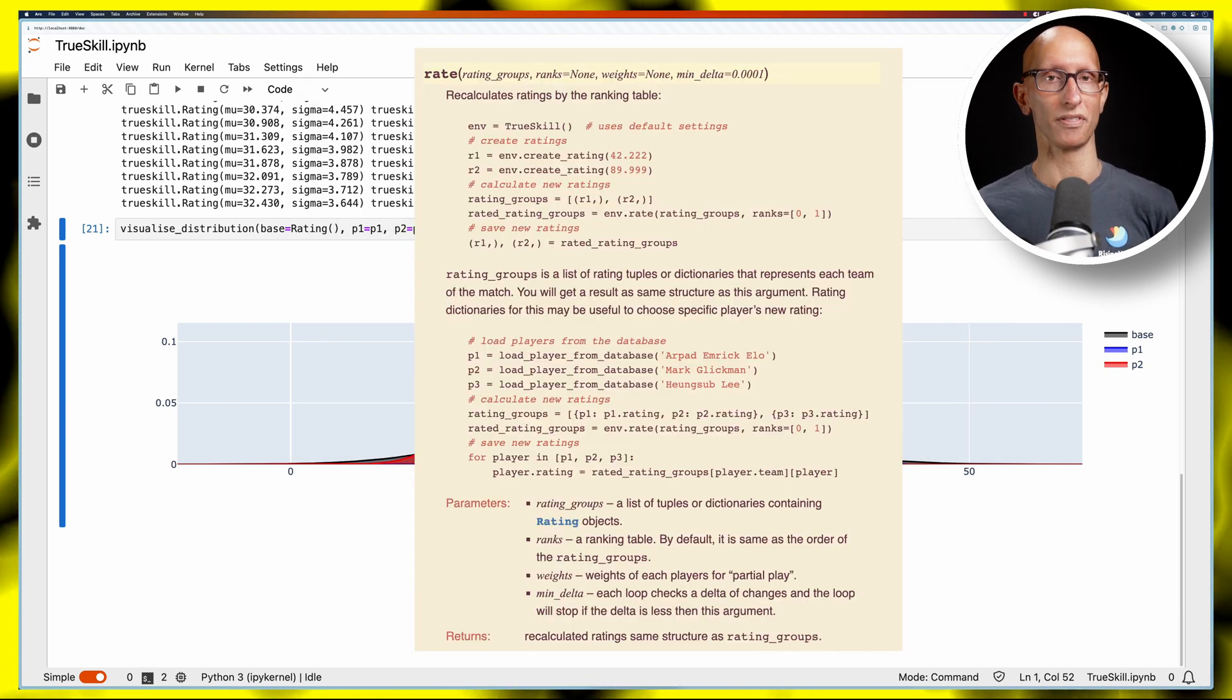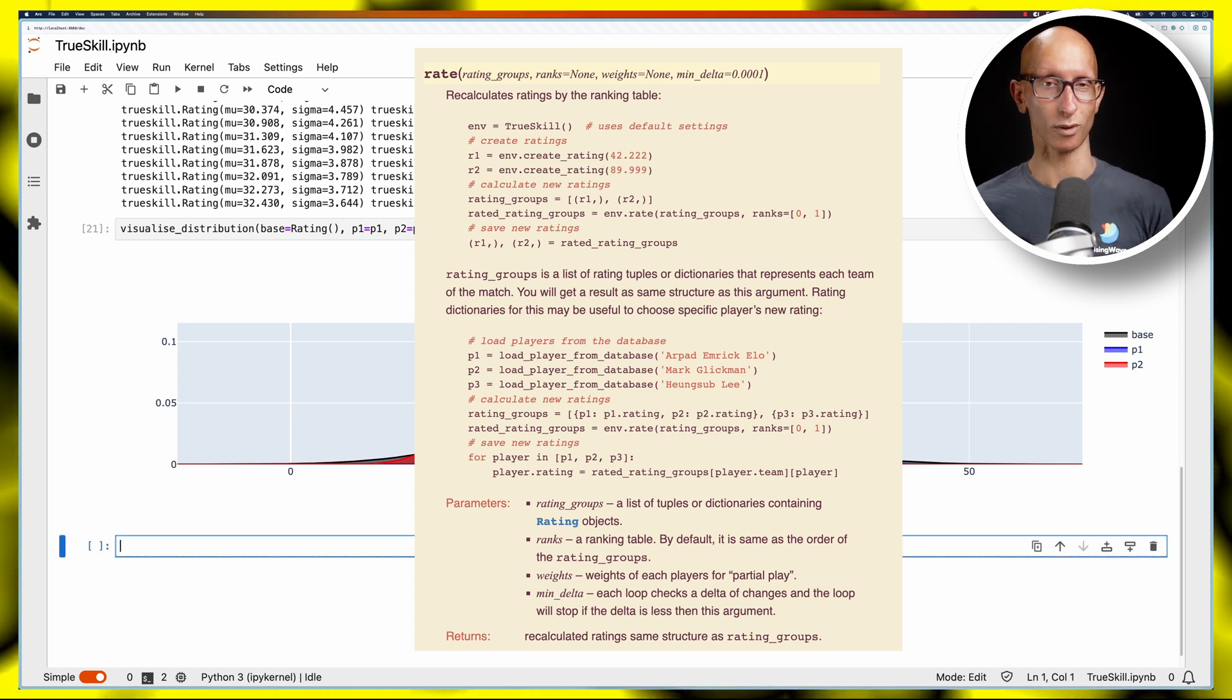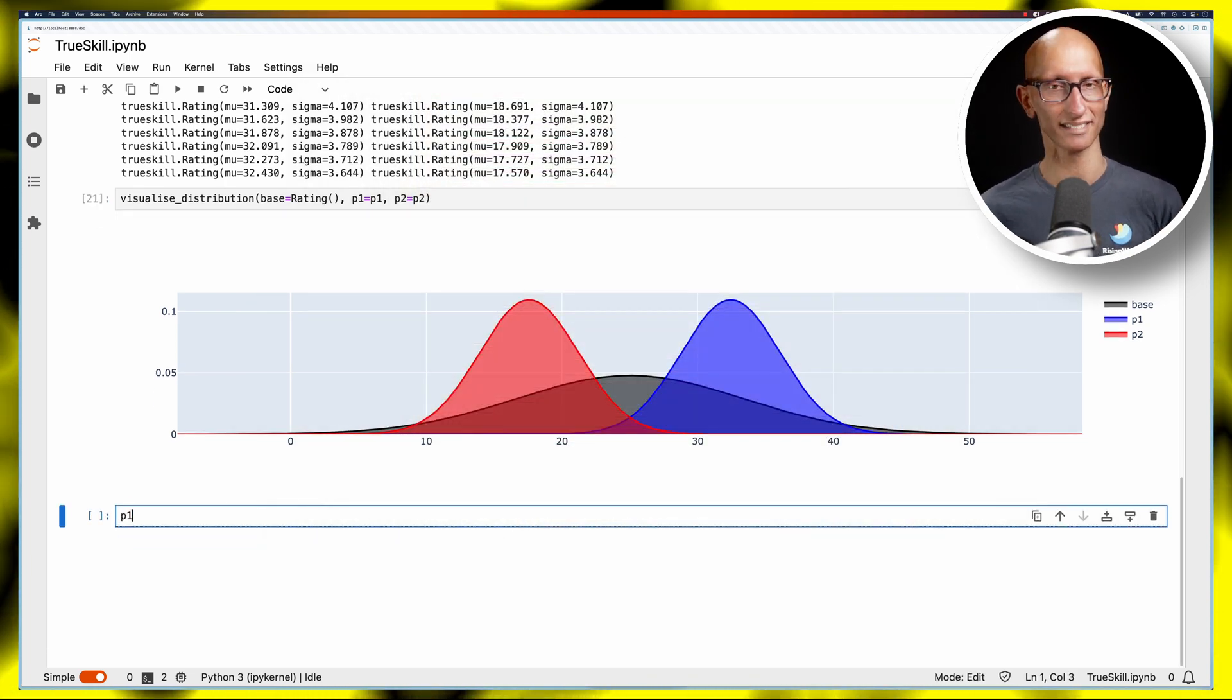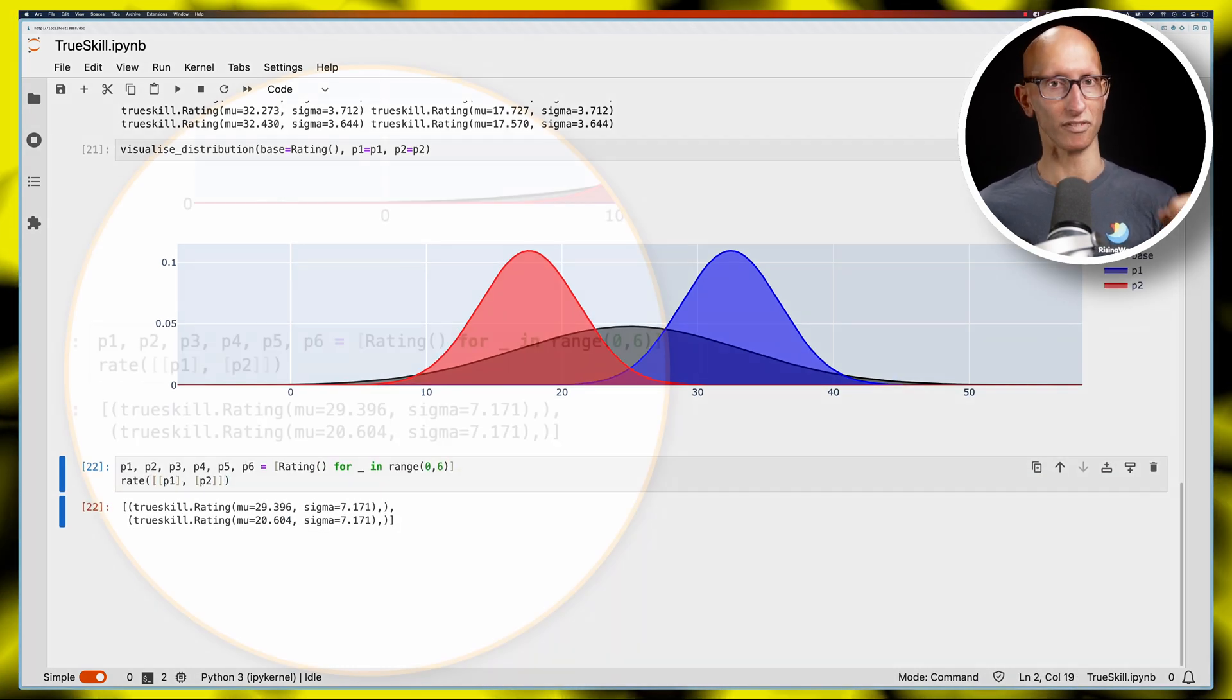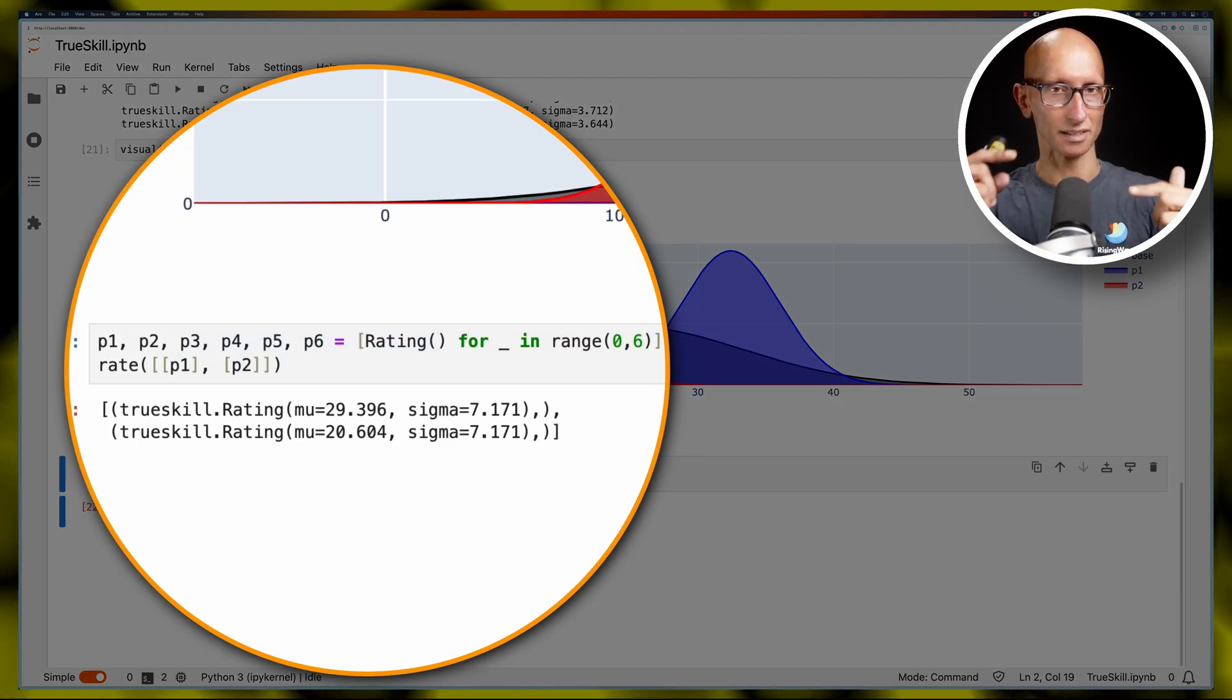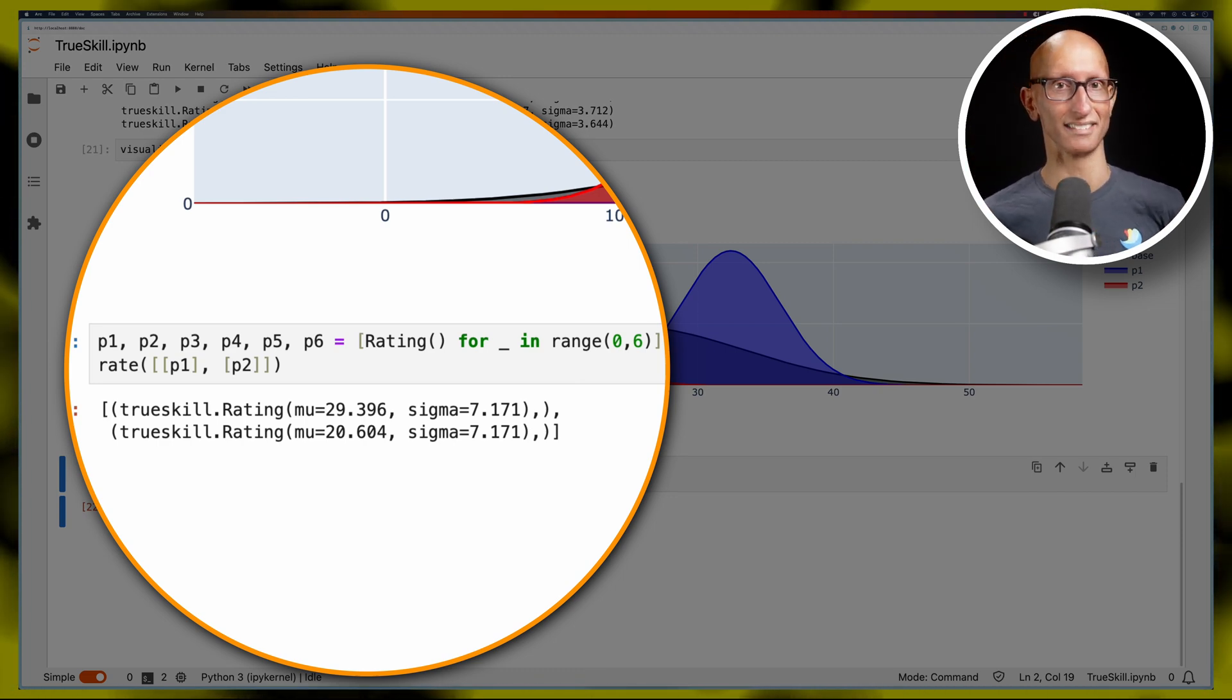Now let's have a look at what we can do with the rate function. So this takes in what they call rating groups, it's an array of arrays. So we'll create six players and then we're going to do exactly the same as what we did with p1 and p2 before, but notice this time we pass in an array and then we've got an array for p1 and an array for p2 as well, and then the result is the same.